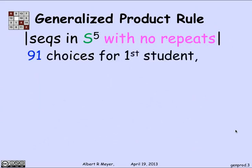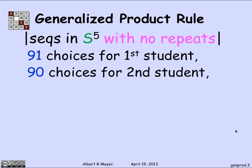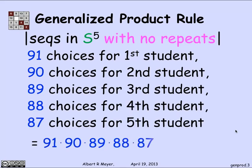Namely, there are 91 ways to choose the first student among the 91. And whichever first student you've chosen, that leaves 90 other students that you could choose to be second. And once you've chosen the first two, that leaves 89 students you can choose for the third, and 88 for the fourth, and 87 for the fifth. And the formula then is 91 times 90 times 89, 88, 87 for the number of sequences of distinct students of length five.